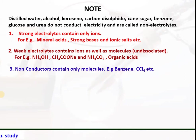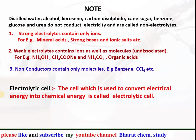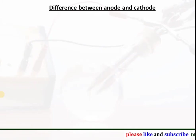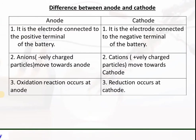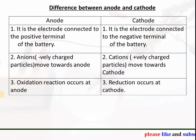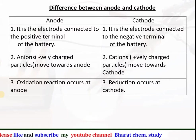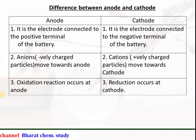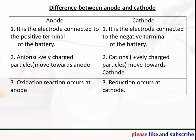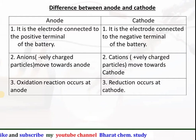Electrolytic cell: the cell which is used to convert electrical energy to chemical energy is called an electrolytic cell, used during electrolysis. Anode is the electrode connected to the positive terminal of the battery, whereas cathode is the electrode connected to the negative terminal. Anions — negatively charged particles — move towards the anode, whereas positively charged particles called cations move towards the cathode. Oxidation reaction occurs at the anode whereas reduction reaction occurs at the cathode.